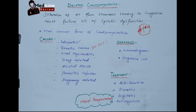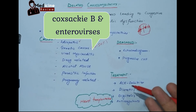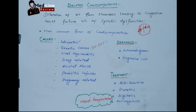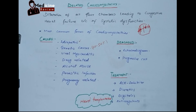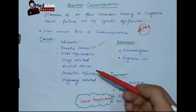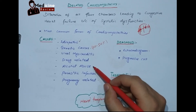Abnormal cytoskeleton in the myocardium leads to an abnormal myocardium, which will lead to dilated cardiomyopathy. Another cause is viral myocarditis — the most important one is Coxsackie B virus and enterovirus. Drug-related causes include doxorubicin, which is a highly cardiotoxic drug, and adriamycin.